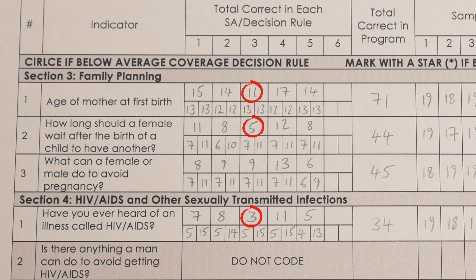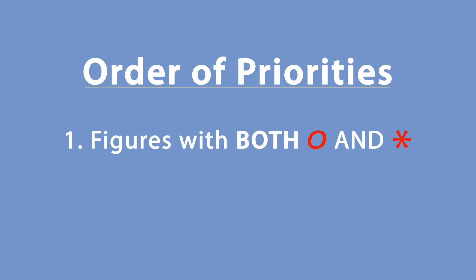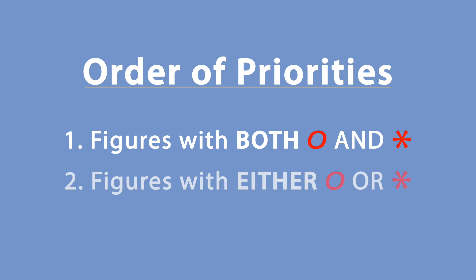For regular monitoring, you can also look for those marked with an asterisk. These are the indicators which have not met the regular target. Figures which are both circled and marked with an asterisk will be our highest priority areas. Our next highest priority will be those indicators which are either circled or marked with an asterisk.